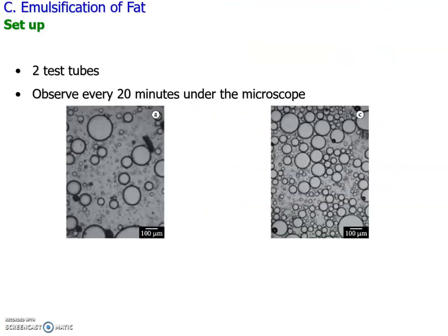Here's an image of the results you would have seen under the microscope after about 20 minutes. In test tube number 1 you can see larger fat droplets that have started to fuse together, versus the other slide where the oil droplets are much smaller on average and there are a lot more of them. This is a nice image showing the effect of emulsifier on droplet size in an oil and water test tube.